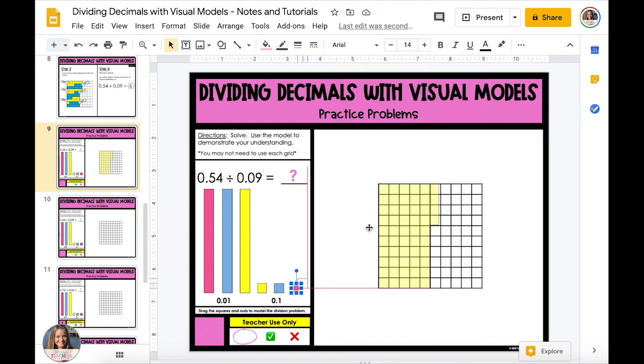Now that we have our 54 hundredths, we need to separate this into groups of nine hundredths. You can either go vertically or horizontally to shade in the nine hundredths, and you can also alternate colors using all of the colors on the side.